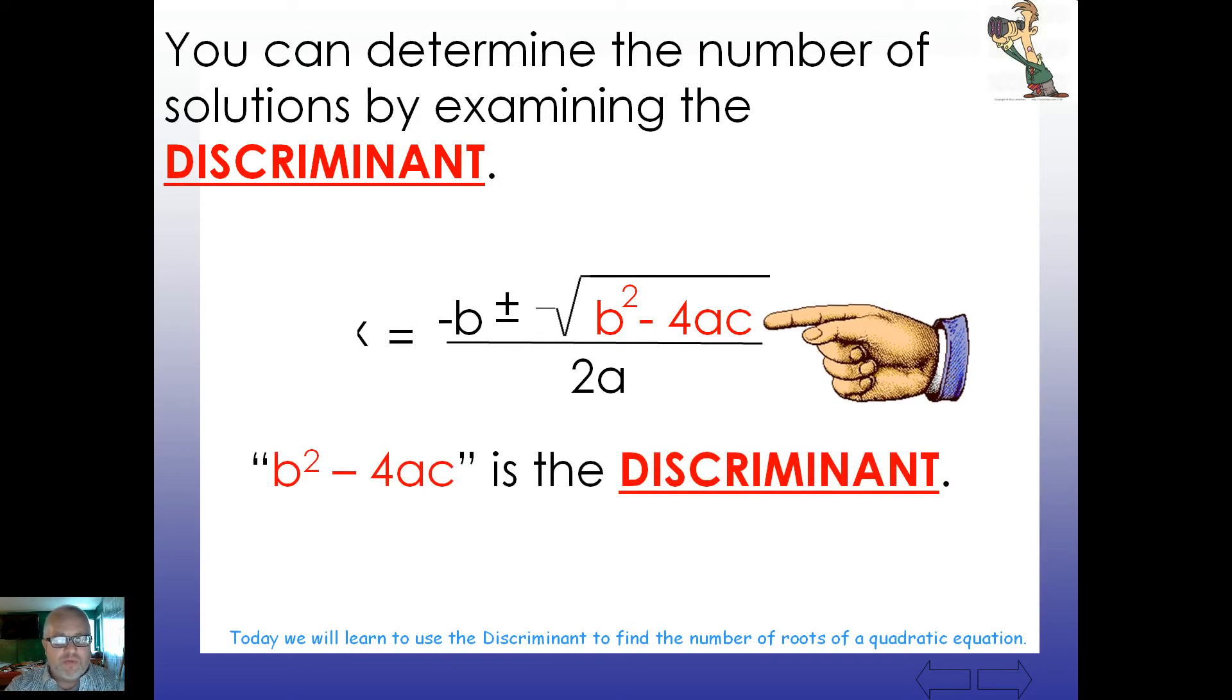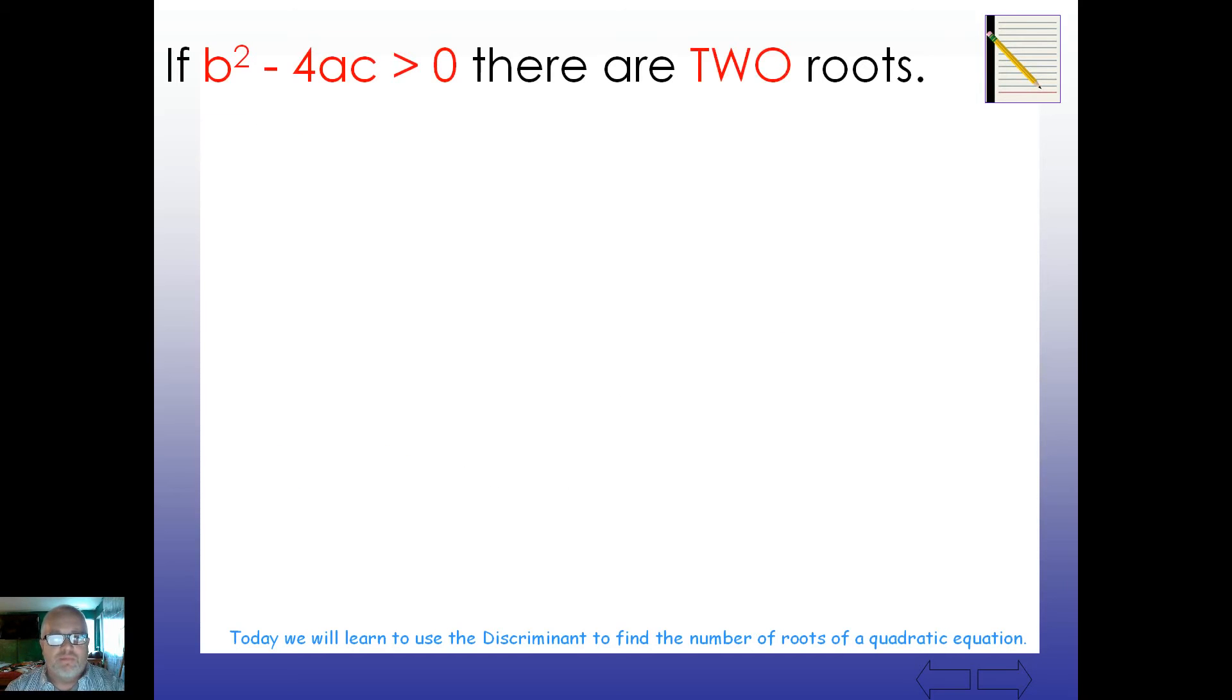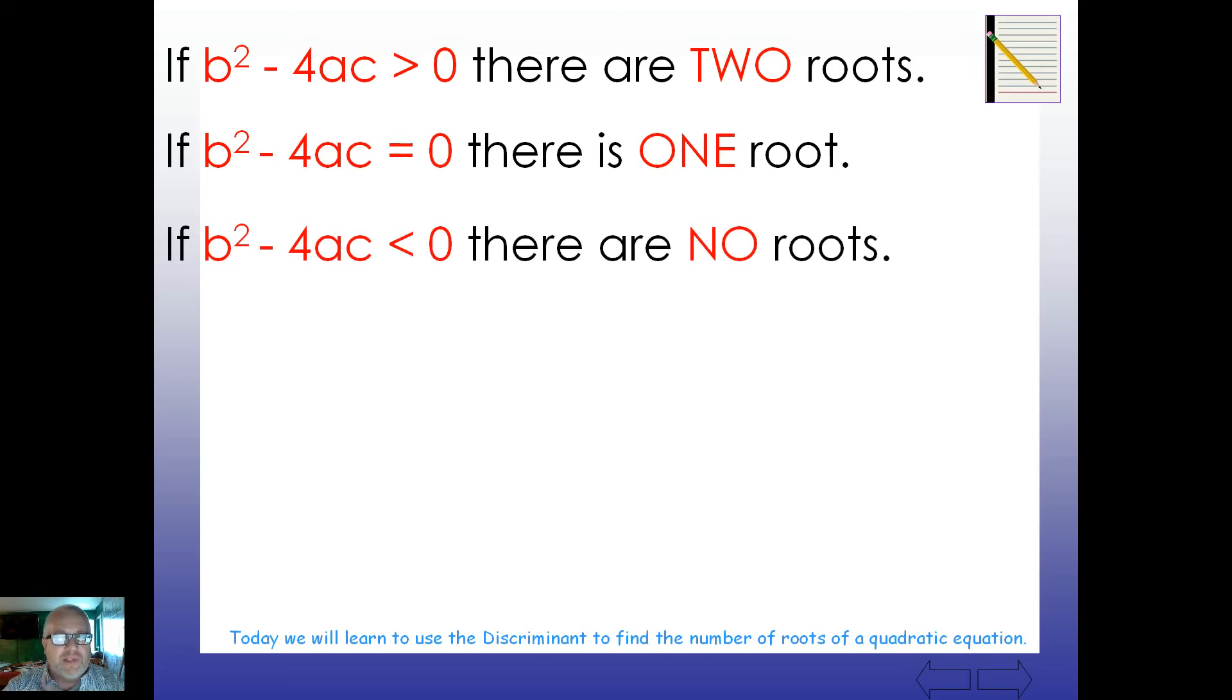So, this right here, b squared minus 4ac, is actually the discriminant. So, if this particular problem here, if you do that math and you get something that's a positive number, bigger than zero, there's actually two roots. Larger than zero, there's two roots. So, if the actual discriminant equals zero, well, then there's only one root. And if it's less than zero or negative, there's no roots.